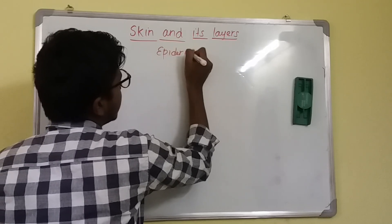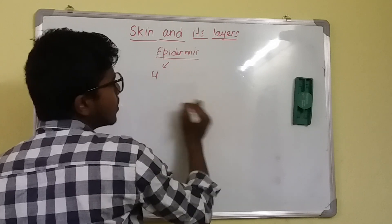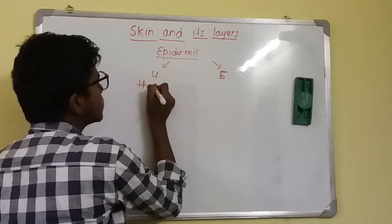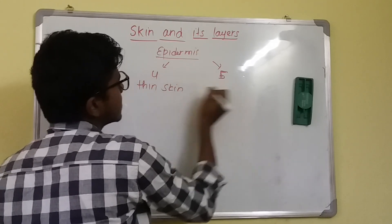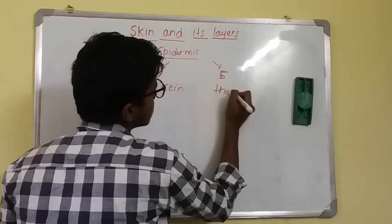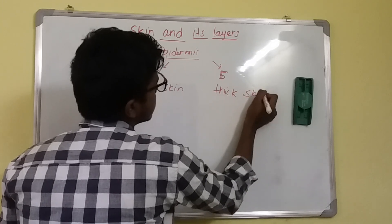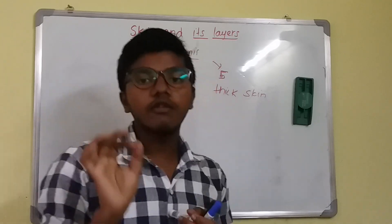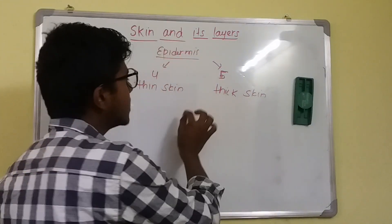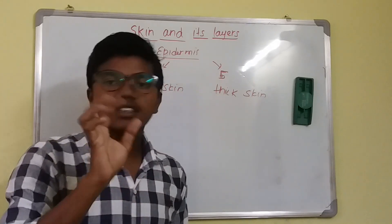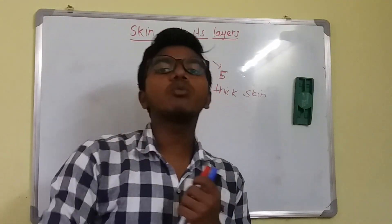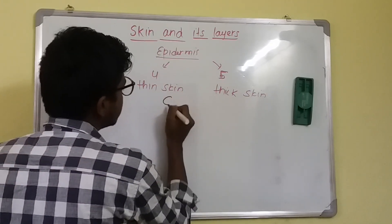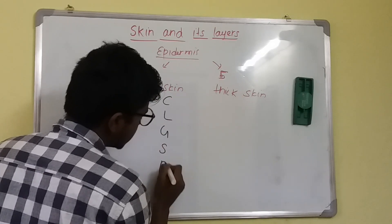The epidermis has mainly four layers in thin skin and five layers in thick skin. Thick skin is present in the palms and soles of our body. We can memorize the five layers by the mnemonic: Country, Lux, Green, Scenes, Bisac — where C stands for Stratum Corneum, L for Lucidum, G for Granulosum, S for Spinosum, and B for Basale.